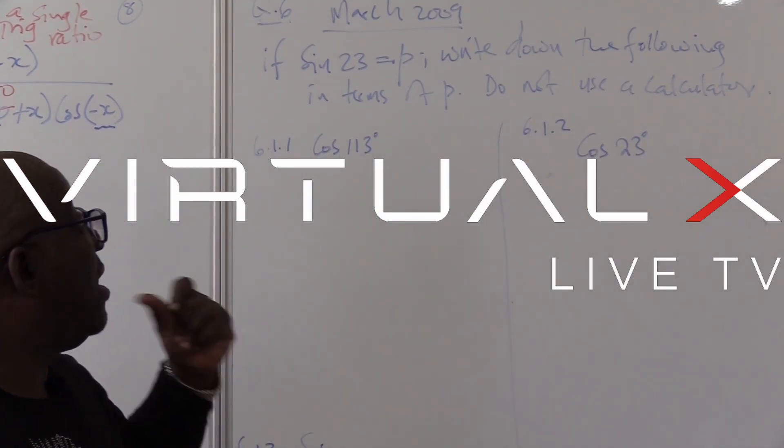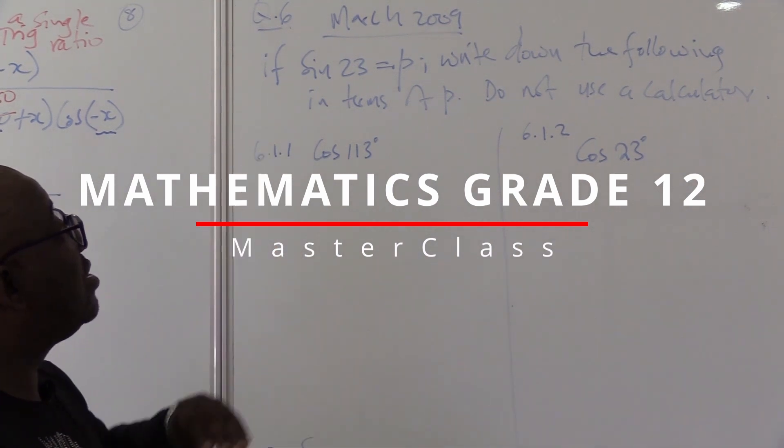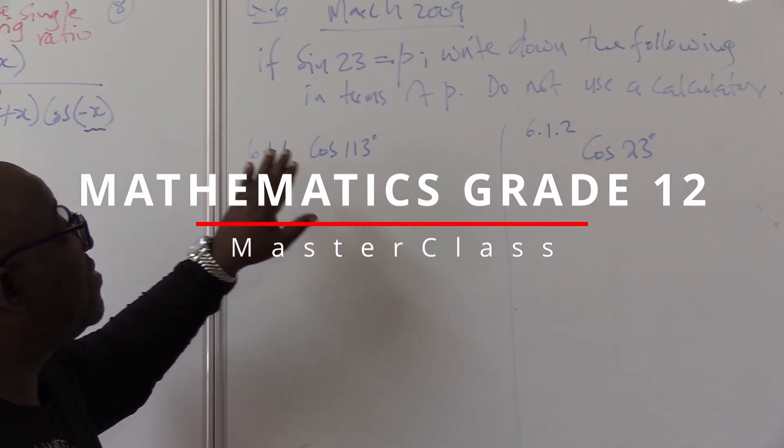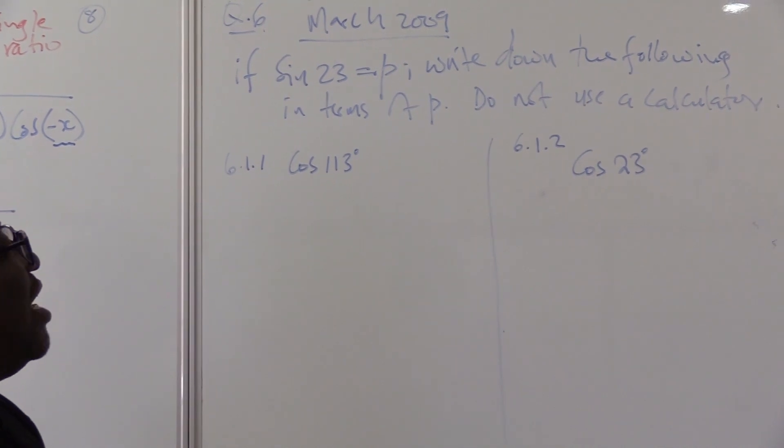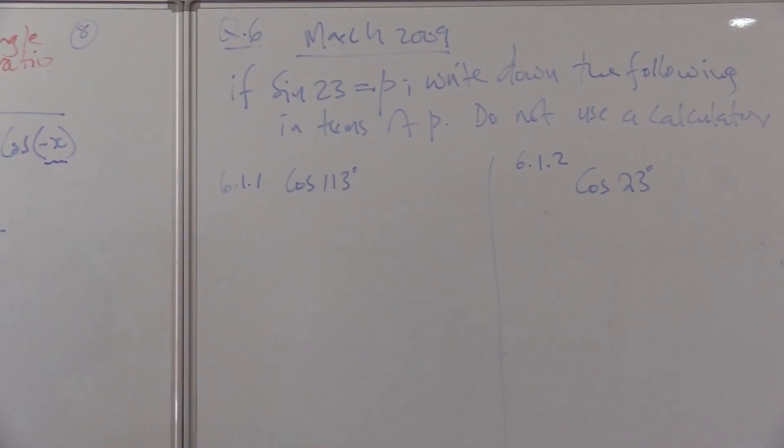In trigonometry, we always find problems like this where you express something in terms of something. In this case, it says if sin 23° equals P, write down the following in terms of P. Do not use a calculator.